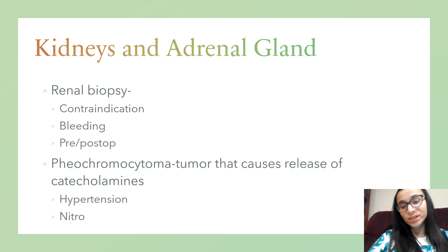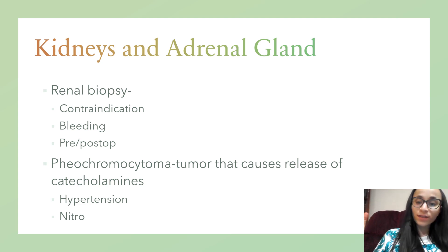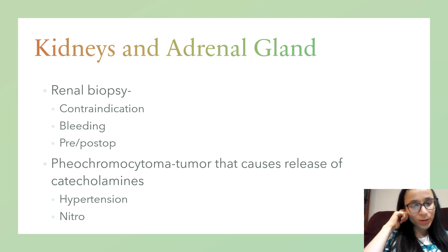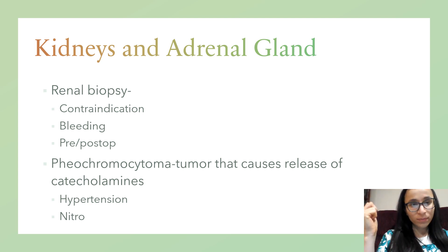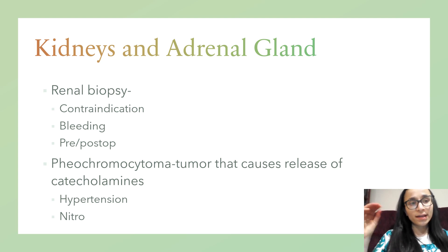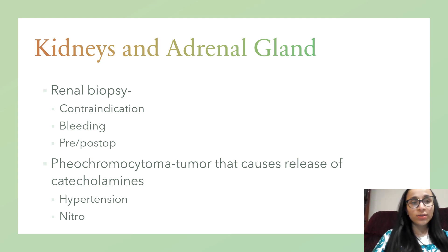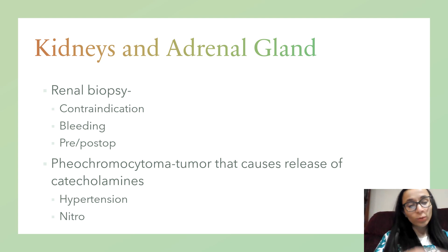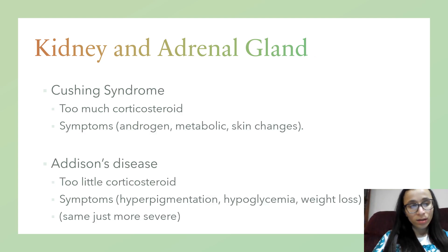A renal biopsy involves taking a small piece of kidney tissue to examine under a microscope. The main contraindication is uncontrolled hypertension. Post-op, monitor for bleeding. Pheochromocytoma is a tumor on the adrenal medulla that causes excess release of catecholamines like epinephrine and norepinephrine, which can lead to hypertensive crisis. Treat with nitroprusside to lower blood pressure. One key thing: never palpate the abdomen of a patient with pheochromocytoma.